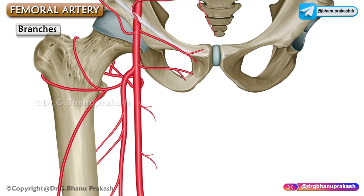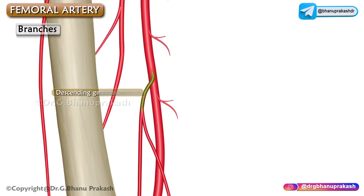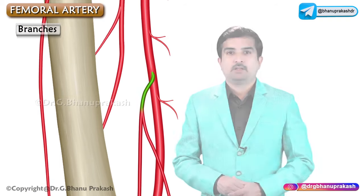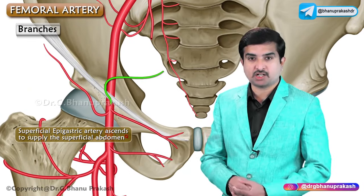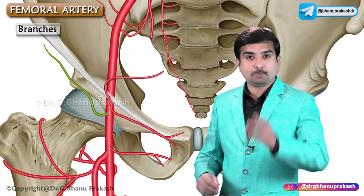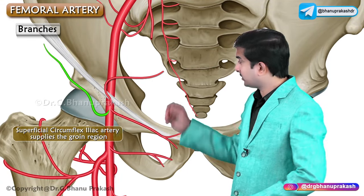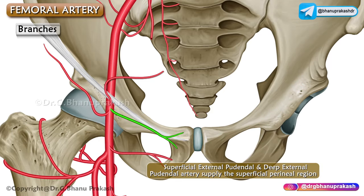These are the branches given off by the femoral artery in the femoral triangle. In the adductor canal, the femoral artery gives off muscular branches and the descending genicular artery. The superficial epigastric artery supplies the superficial abdomen, the superficial circumflex iliac artery supplies the groin region, and the superficial and deep external pudendal arteries supply the perineal region.